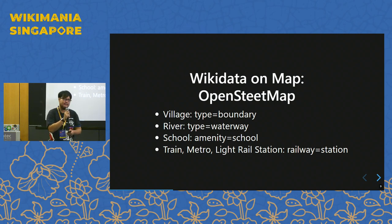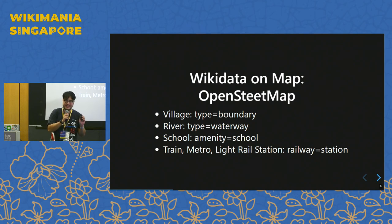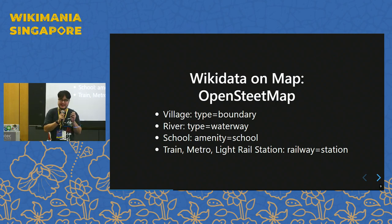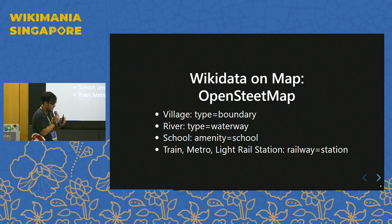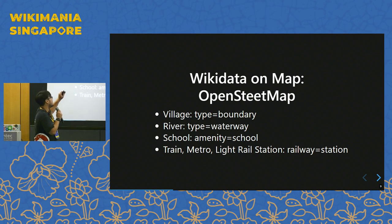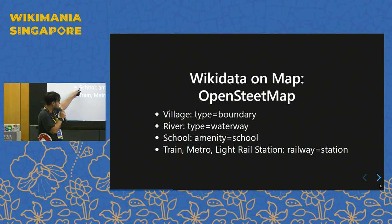For Wikidata maps, everybody should know that the maps behind Wikipedia articles are a customized version of OpenStreetMap, using OSM data rendered to fit the display needs of Wikipedia articles. Here are some examples. This is an advanced data type called relations, where we can store things like villages, rivers, schools, and train, metro, or light rail stations.